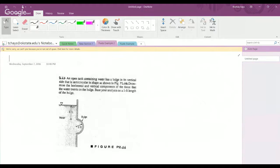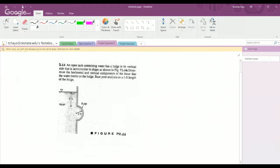So that's one problem. The other example problem I have is 266. And this deals, again, kind of with the same concepts of partitioning a solid fluid into fluid static elements, determining the weights and forces that act at arbitrary boundaries, and kind of the unknown boundary surface type problem. So an open tank containing water has a bulge in its vertical side that is semi-circular in shape as shown in P266. Determine the horizontal and vertical components of the force that the water exerts on the bulge. Base your analysis on the one-foot length of the bulge.